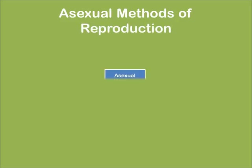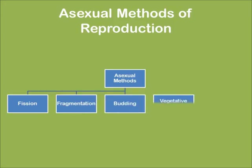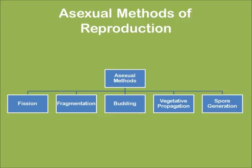Asexual methods of reproduction include: fission, fragmentation, budding, vegetative propagation, and spore generation.